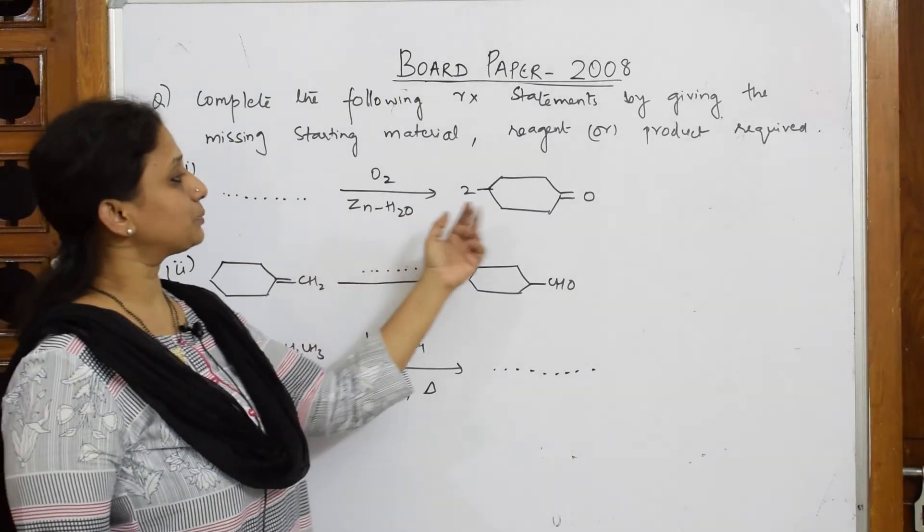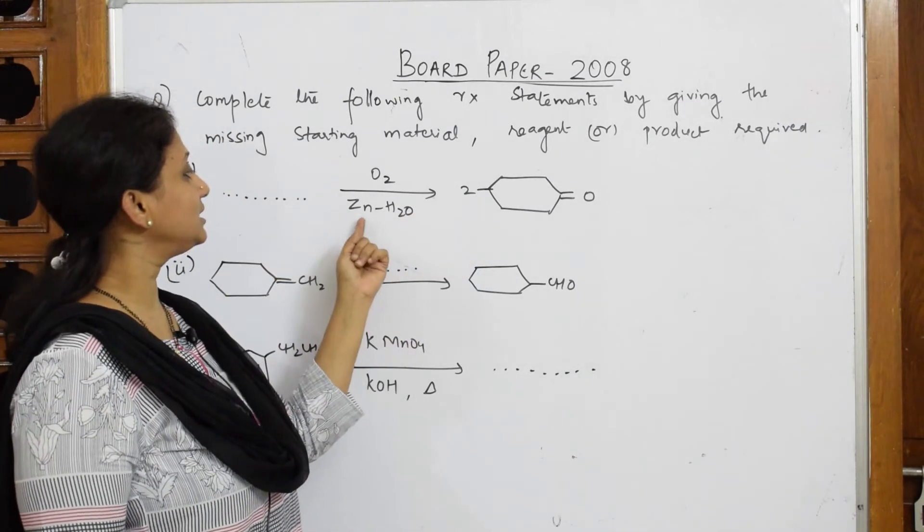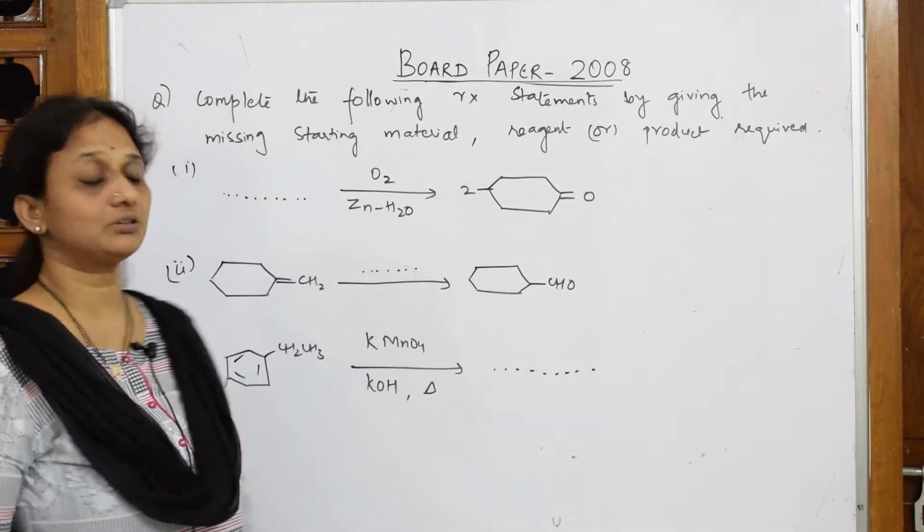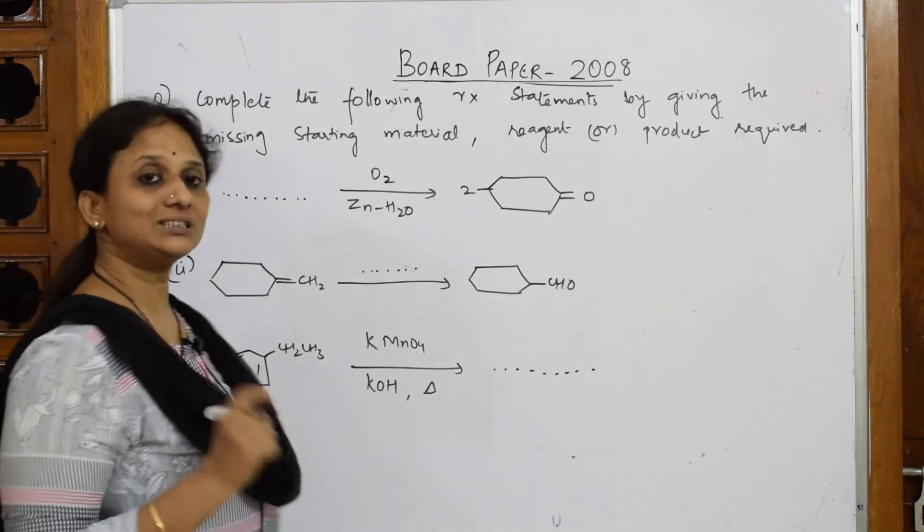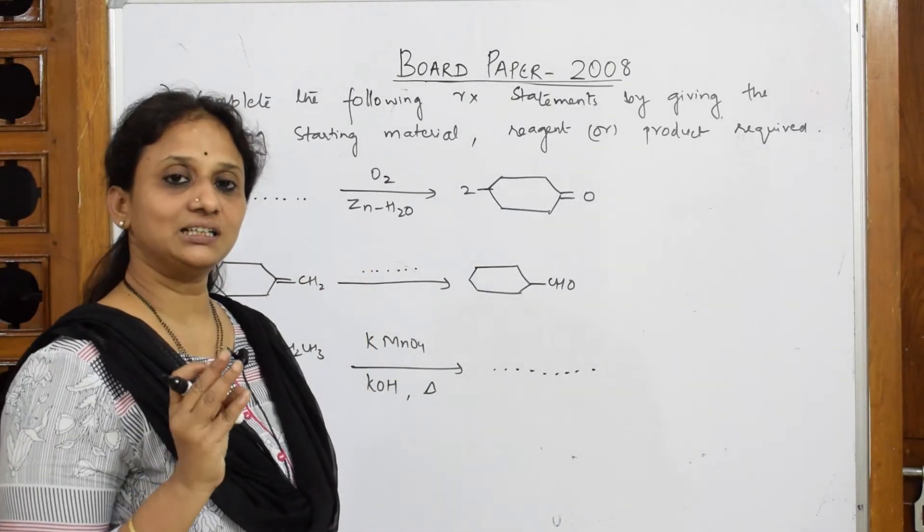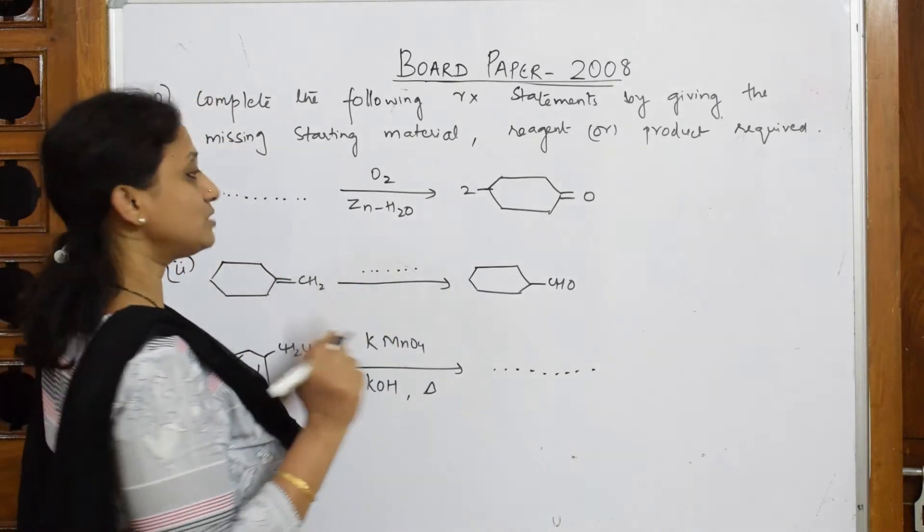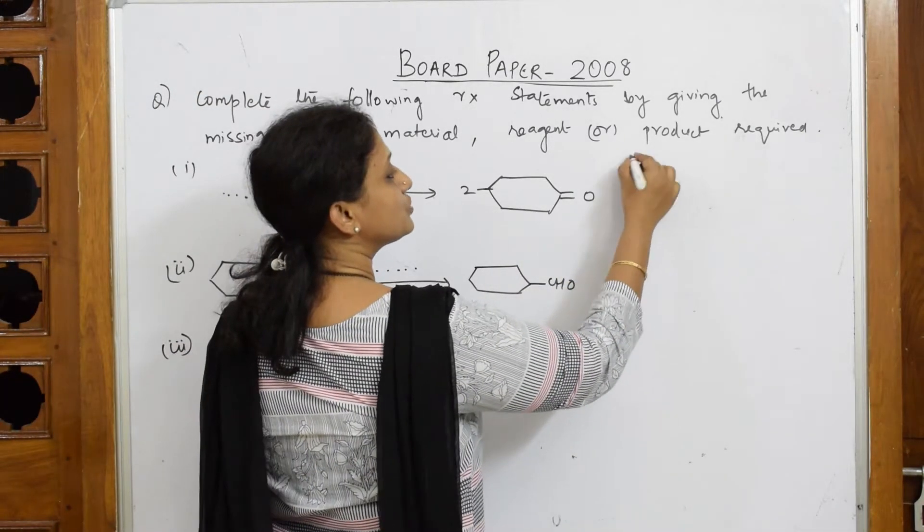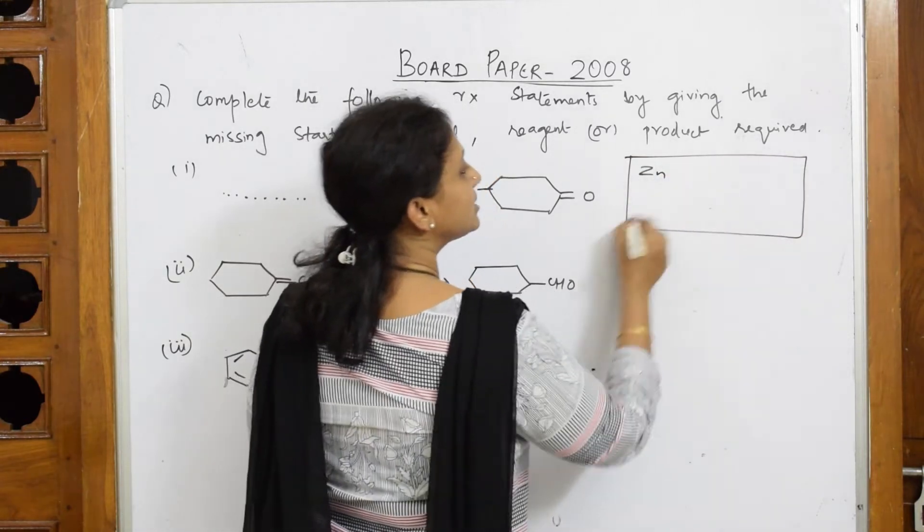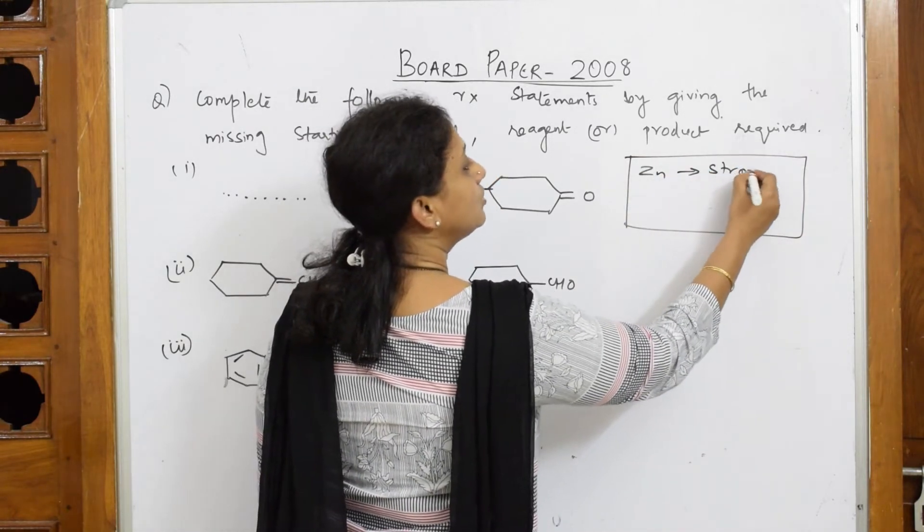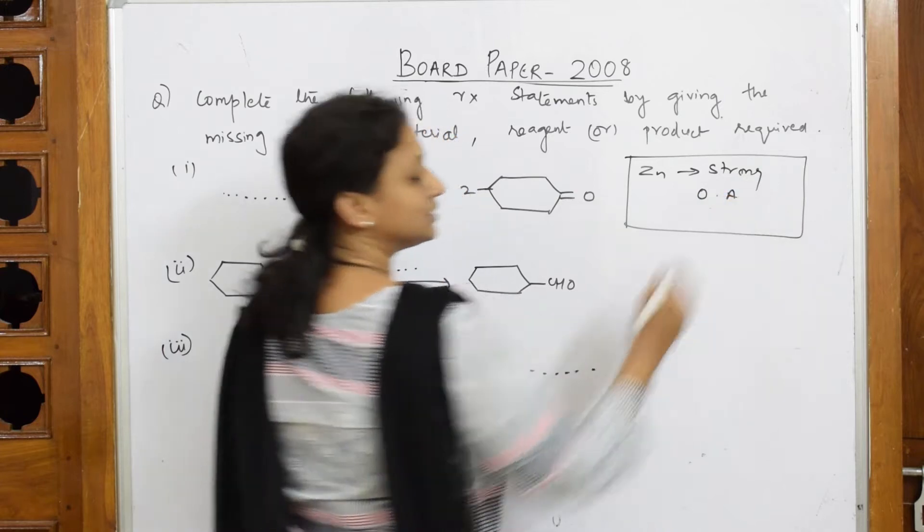They've given us a product directly and on the arrow, very important, they've given us zinc. What is the role of zinc? Zinc, sodium, magnesium - all these are strong oxidizing agents. So as soon as you see zinc, it should strike your mind: zinc is a strong oxidizing agent.